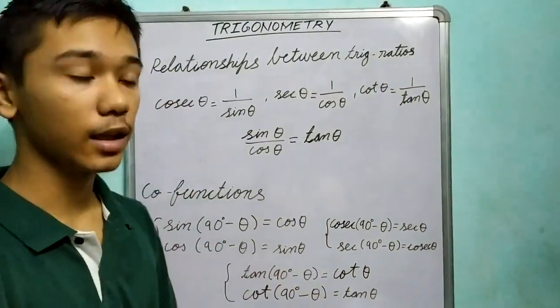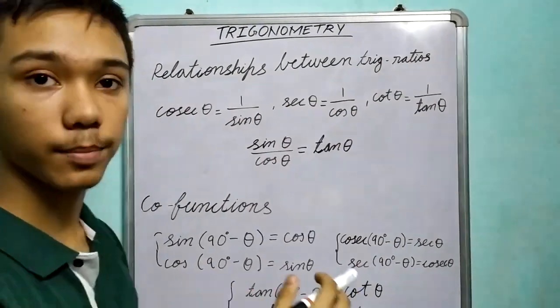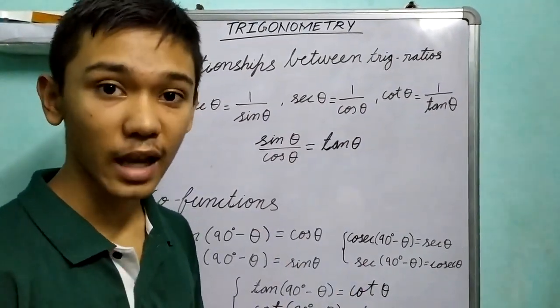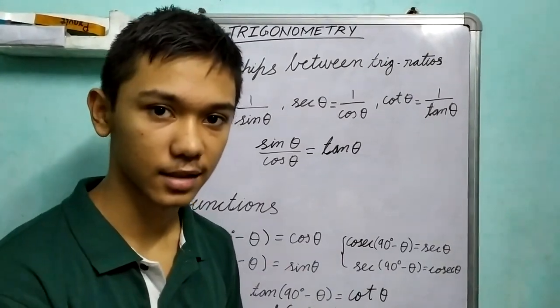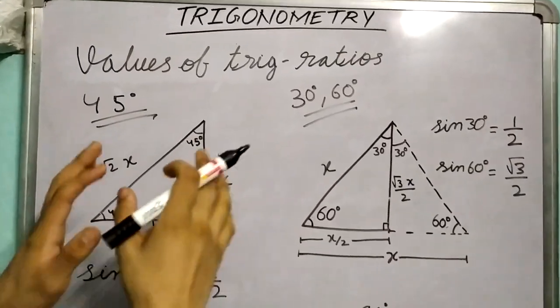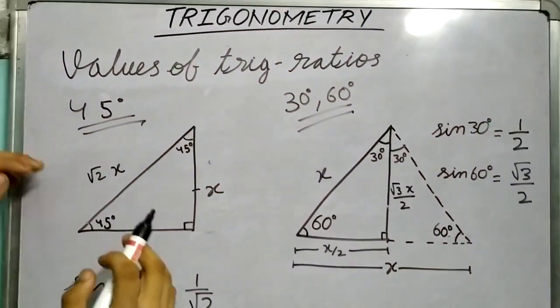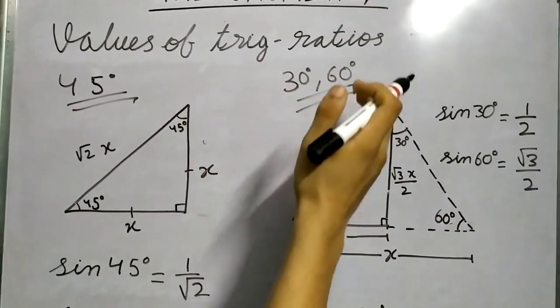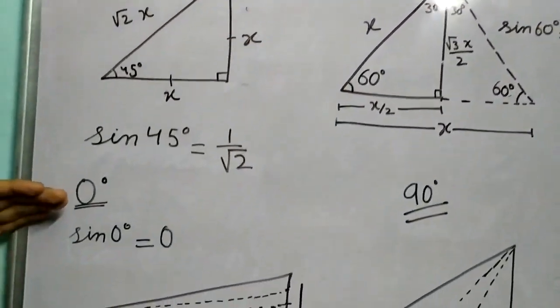And then we write values of trigonometric ratios at some specific angles. So these were the specific angles which I was talking about: 45 degrees, 30 degrees, 60 degrees, 0 degrees, and 90 degrees.